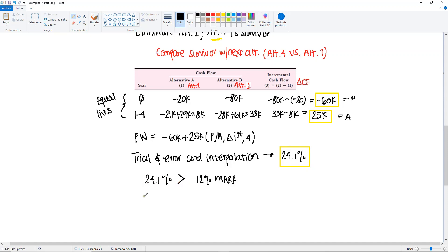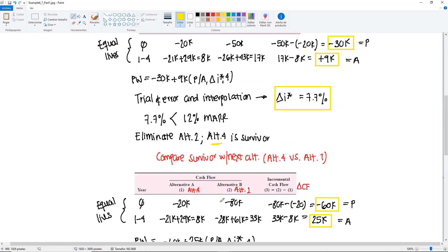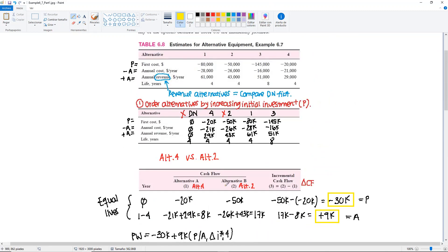So according to the rules, we eliminate alternative 4, and alternative 1 will be the survivor. Now we go up here and we're going to be crossing out alternative 4.